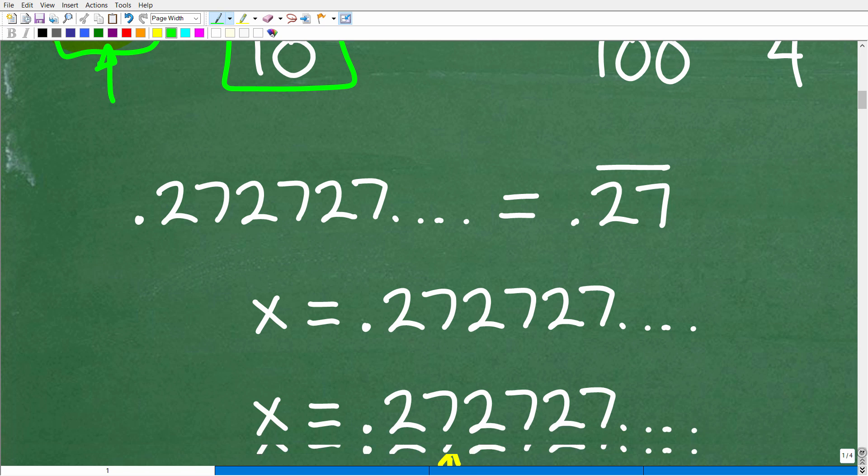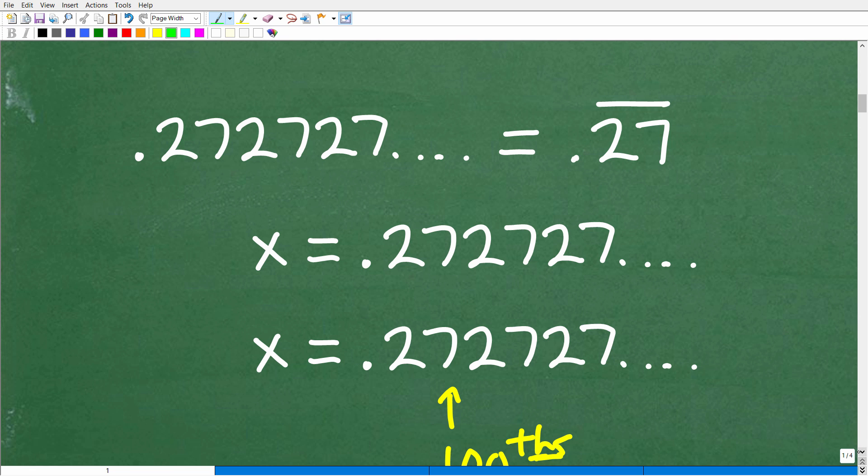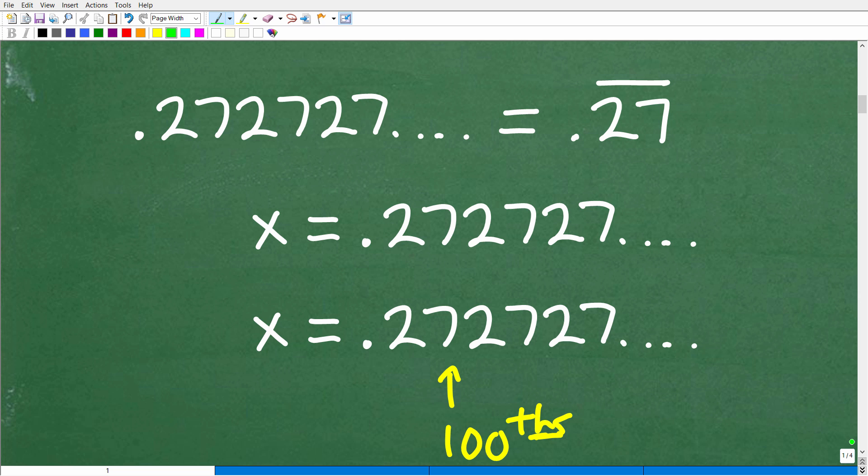If you don't understand what's going on here, just take some notes if you want to remember how to do this. So here is the deal. Here's our decimal: 0.272727. We see that we have a repeating decimal. The 27 is repeating. So instead of writing all these 27s over and over again, we could just put a bar over the repeating part. So this is equal to 0.27 repeating.